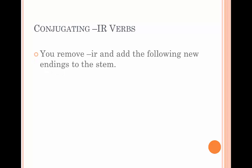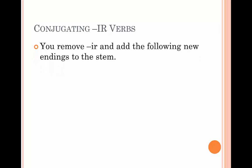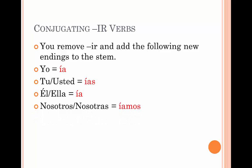Conjugating IR verbs. As with ER verbs, it's exactly the same process. All we have to do is add ía for yo, ías for tú o usted, ía for él and ella, íamos for nosotros o nosotras, íais for vosotros, vosotras and ustedes, ían for ellos and ellas.